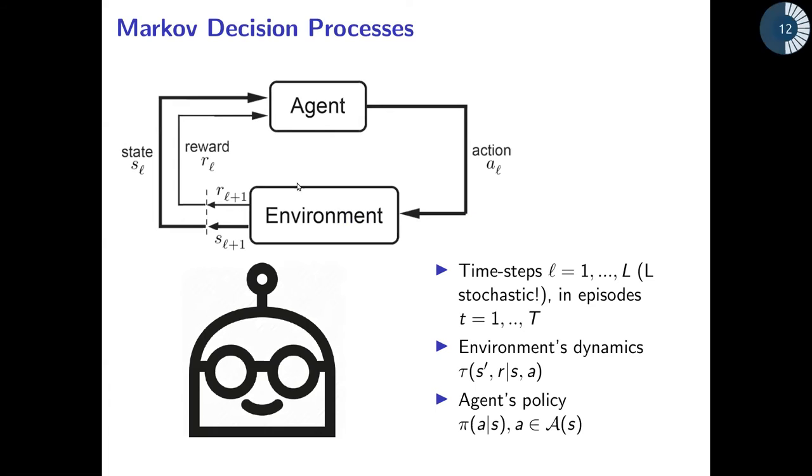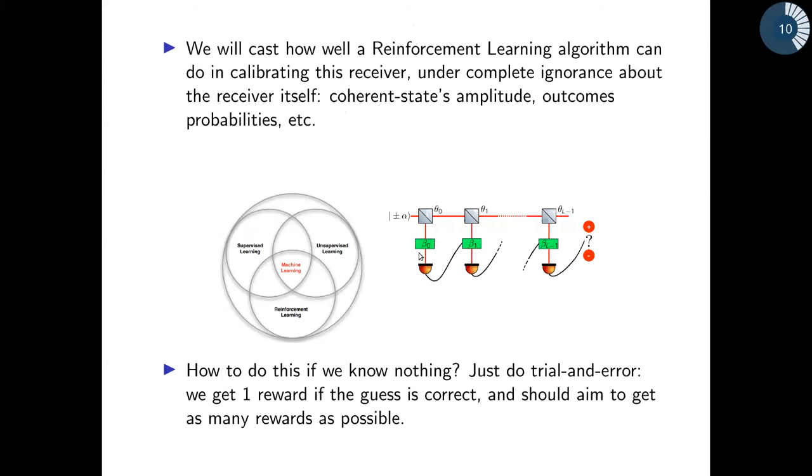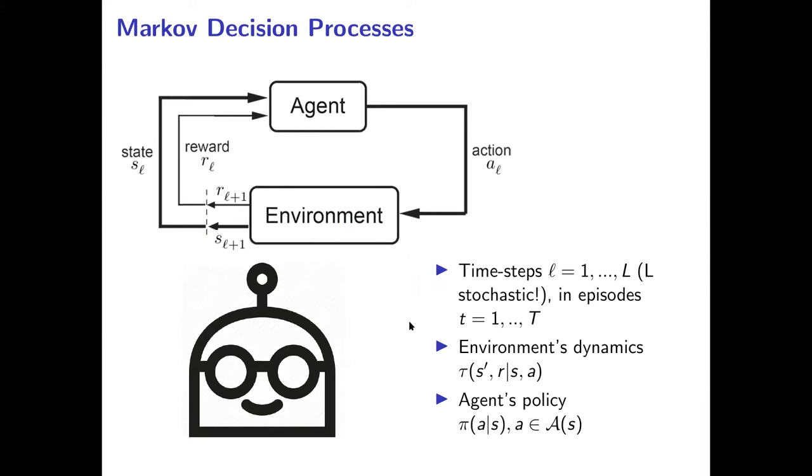This perfectly fits under the framework of reinforced learning and Markov decision processes that is a very popular field nowadays or some field of machine learning. The idea is that the algorithm will sample, will repeat the experiment many times, and since it ignores the outcome probabilities of these detectors, then it will be given a reward of either one or zero when asking to guess for the input signal.